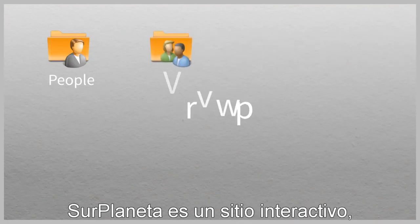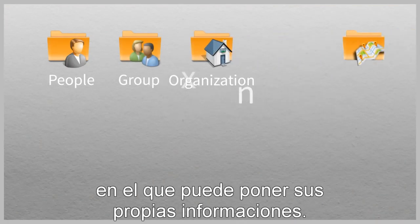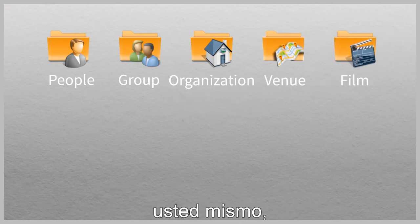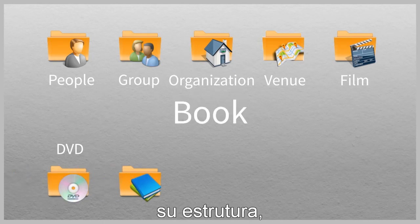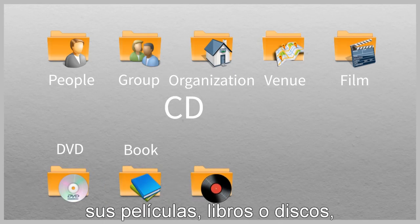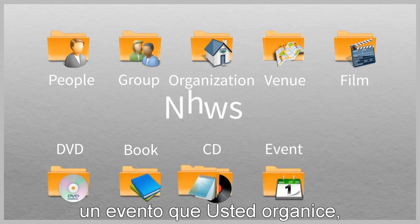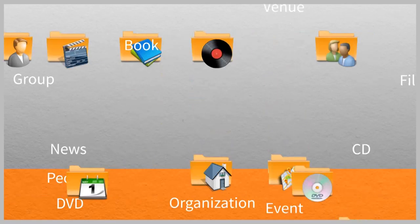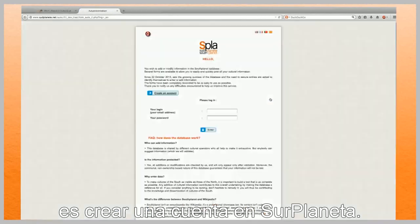South Planet is an interactive site where you can add your own information. You can enter and create pages about yourself, your group, your organization, your venue, your films, books, or music albums, an event you're organizing, or cultural news involving your country. To do so, you first need to create a South Planet account.